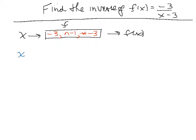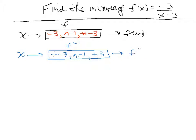For f inverse, x comes in and we undo everything by starting from the right and going backwards, using the opposite of each operation. Instead of multiplying by minus 3, we divide by minus 3. The opposite of raising to the minus one power is again raising to the minus one power — that one takes a bit of thought. Then instead of subtracting 3 we add 3. So f inverse of x equals the quantity x divided by minus 3, all raised to the minus one, plus 3.